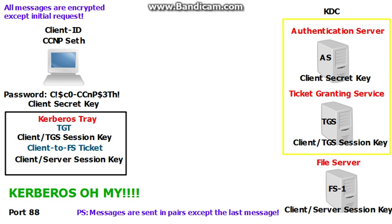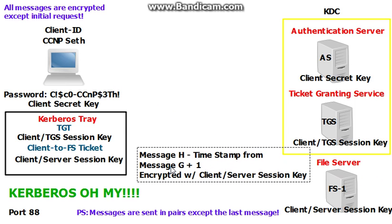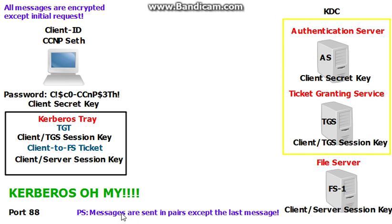There was a lot going on with all these messages. But if you step back and think about what's happening: the client authenticates to the server; the server gives him information to authenticate to the TGS; the TGS authenticates him and sends messages back to the client used to authenticate to the file server; the file server authenticates the client; and then the client authenticates the file server based on the timestamp plus one. That's why that last message is sent. Everything is sent in pairs except that last message. This is Kerberos — a lot going on, but the good thing about videos is that you can always rewind and break it down.